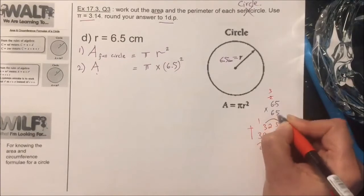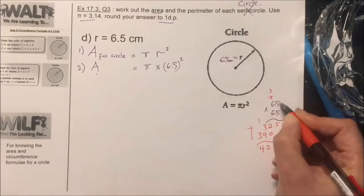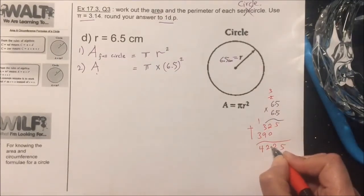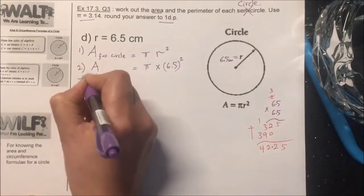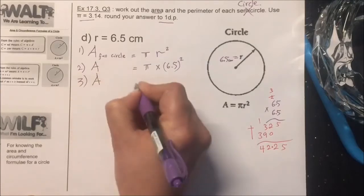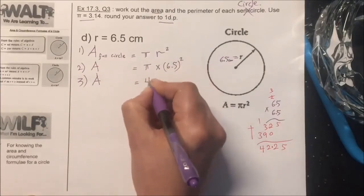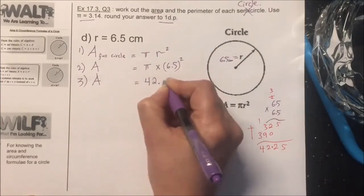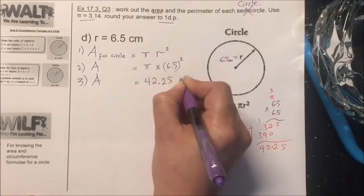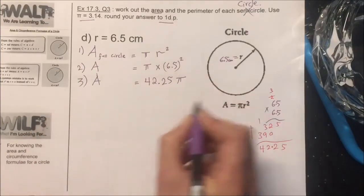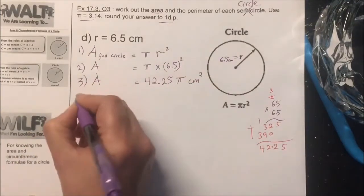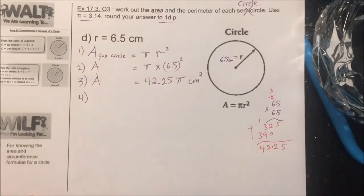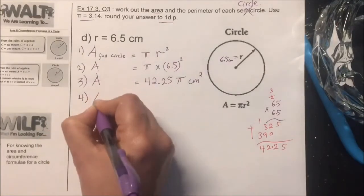Add 5, 2, 12, 4. Decimal here, decimal here. One two, one two. Place the decimal and write the answer in terms of pi. A is equal to 42.25 pi and it's centimeter squared.